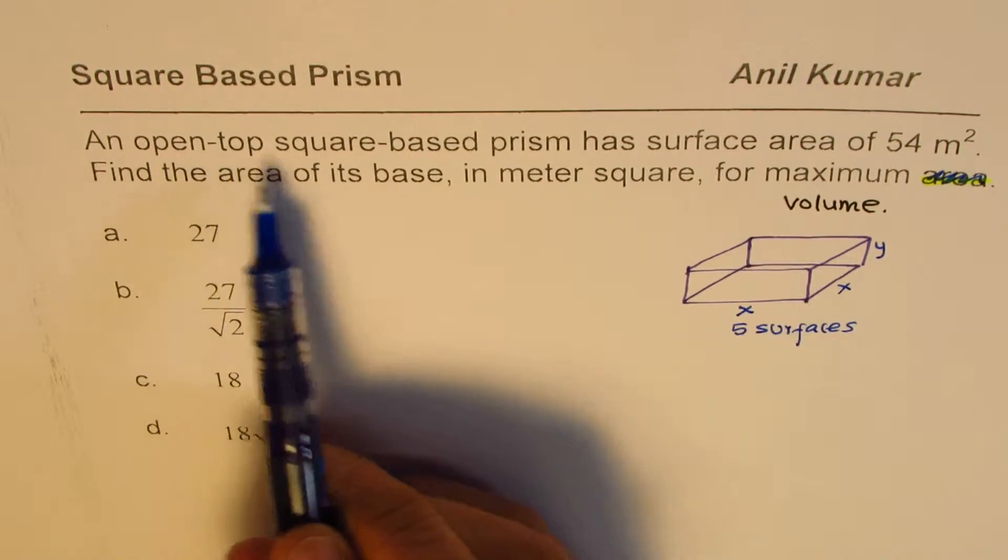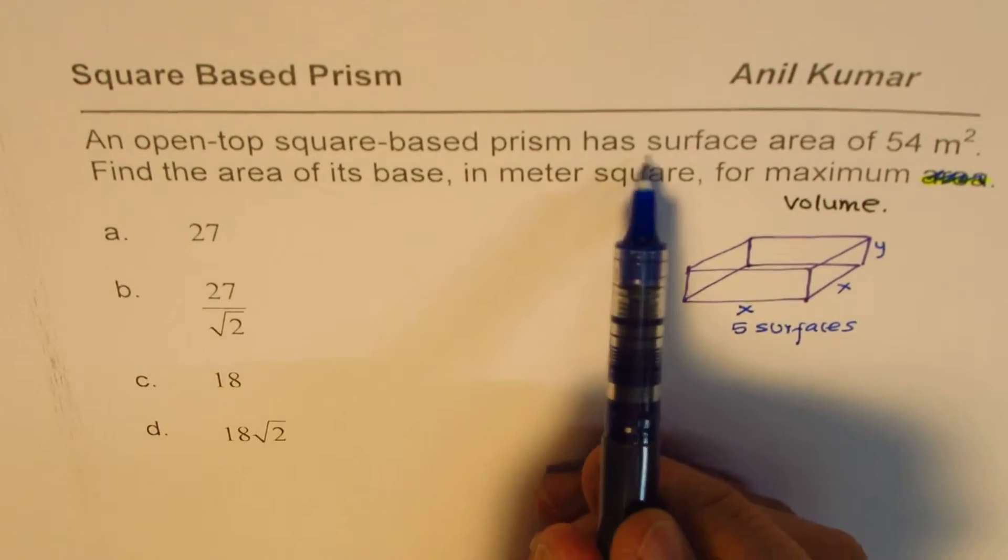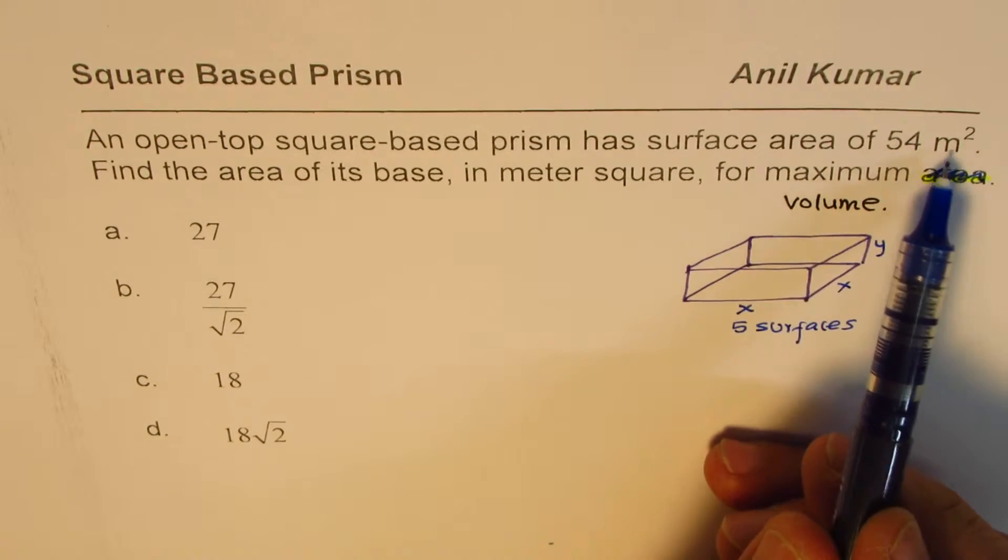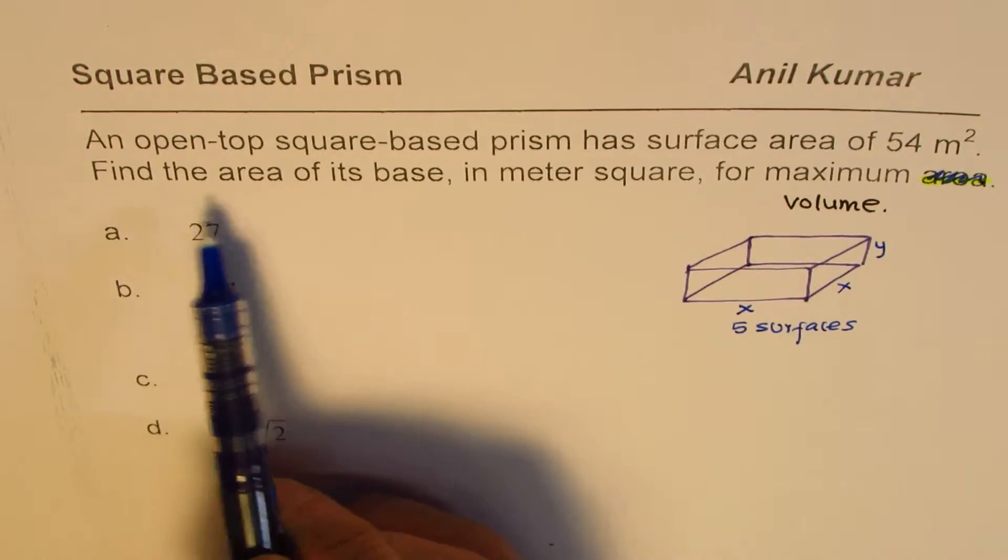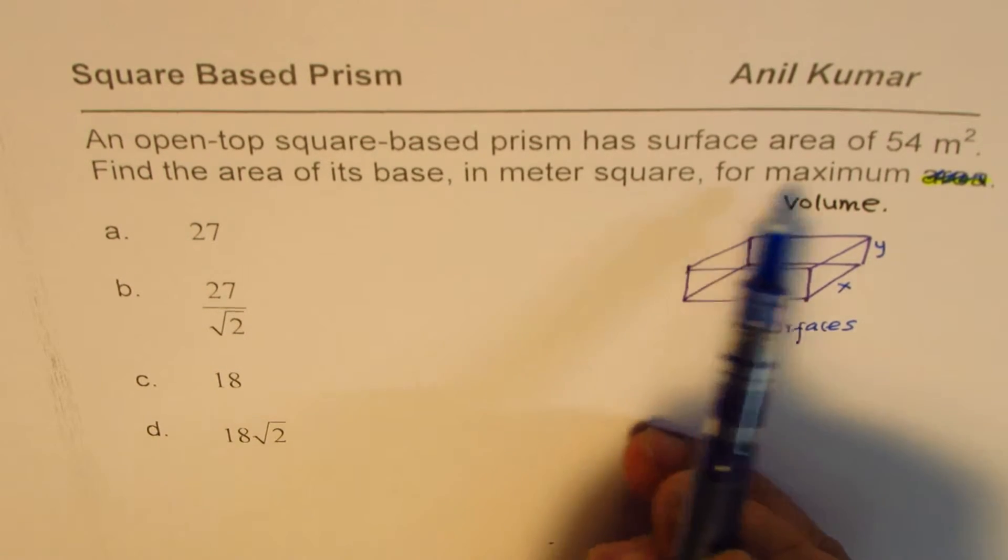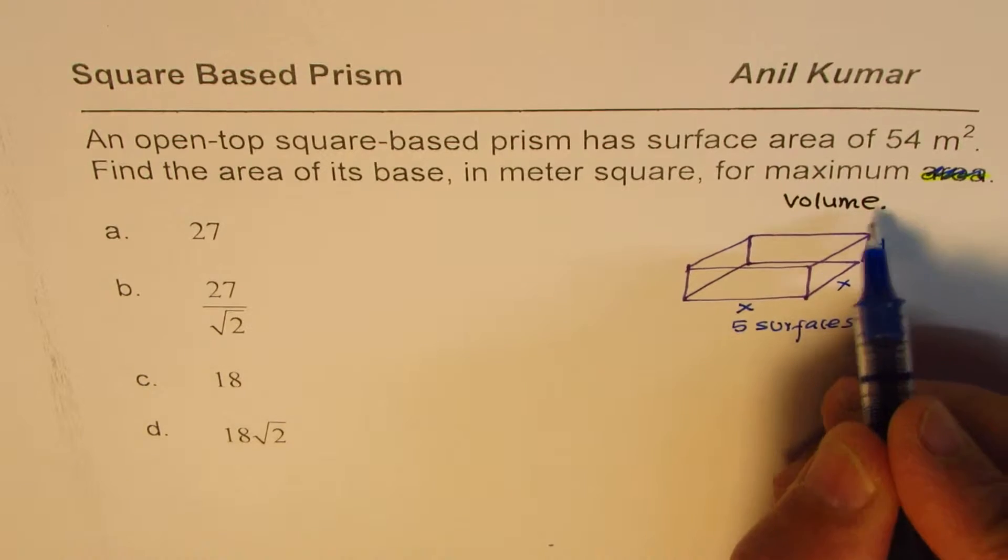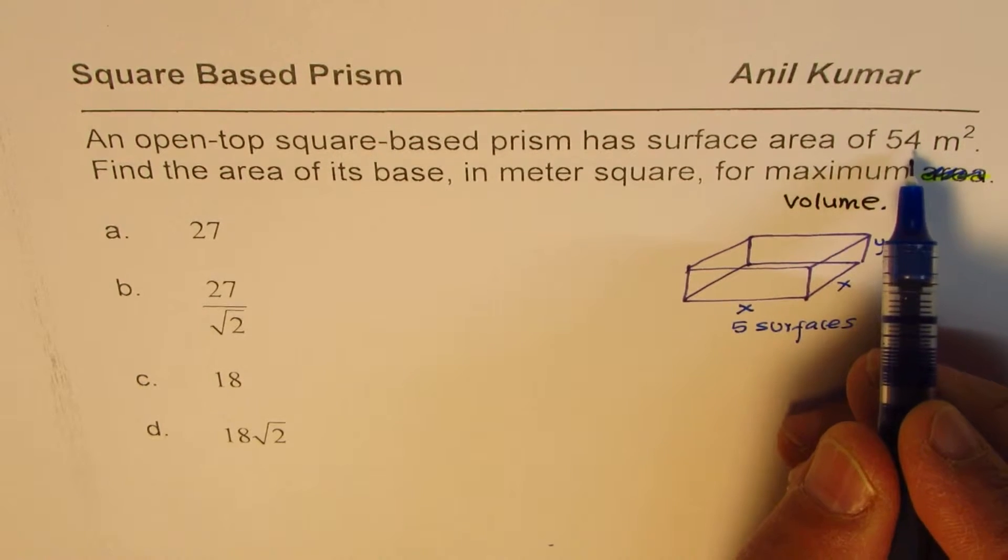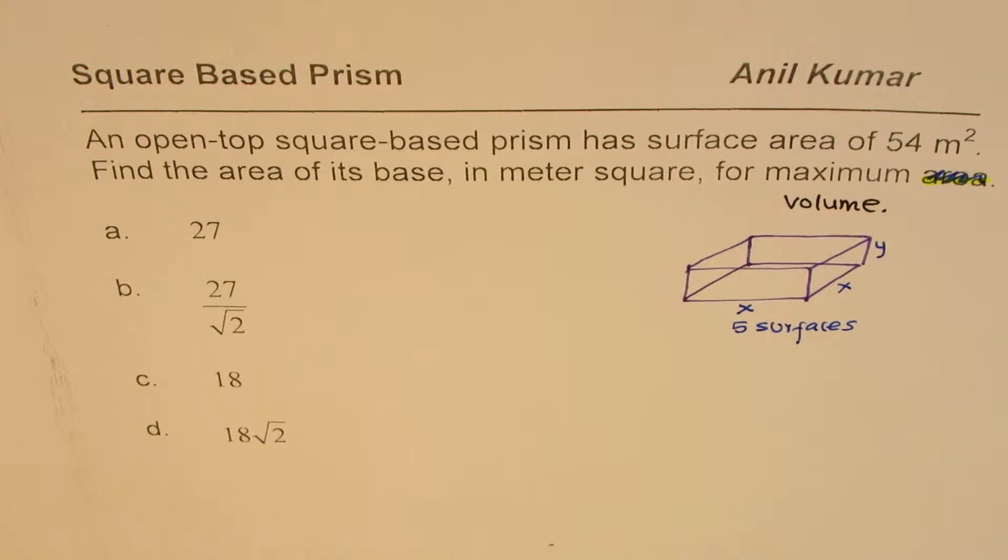Let's read it once again. It says an open-top square-based prism has surface area of 54 meter square. Find the area of its base in meter squares for maximum volume. So we have to have a shape with that much area giving maximum volume.